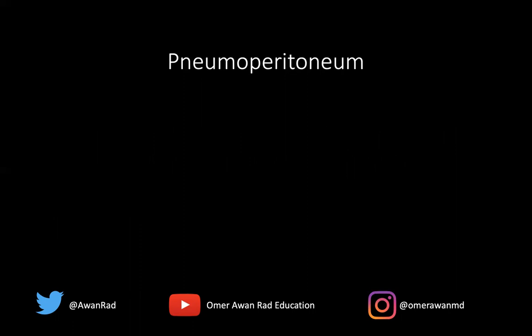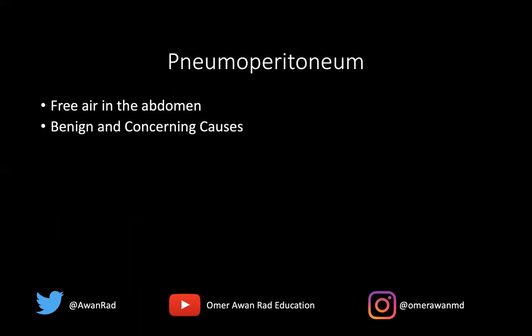I want to talk today about pneumoperitoneum. Pneumoperitoneum means that there's free air in the abdomen. There can be benign causes and there can be more concerning causes of pneumoperitoneum. For the USMLE, it's important to know the various causes and know how to recognize it on an x-ray or a CT because they can show that to you. There can be some dire consequences — it's a do-not-miss diagnosis — so I want everyone to be comfortable recognizing it immediately.